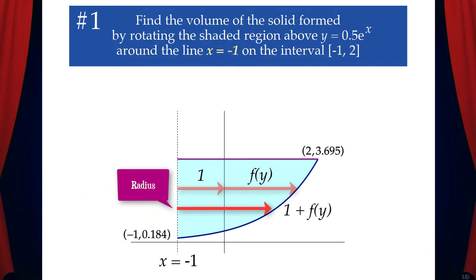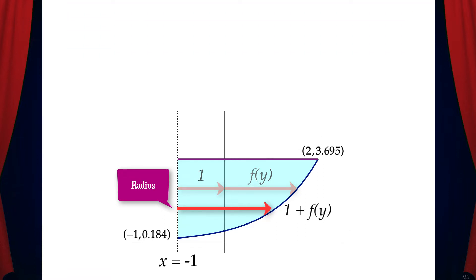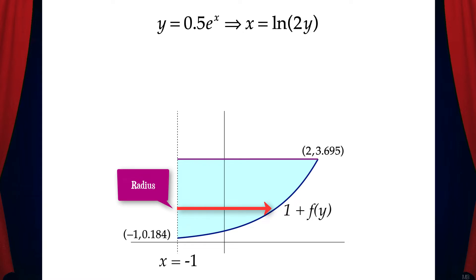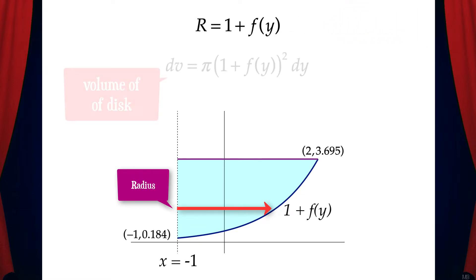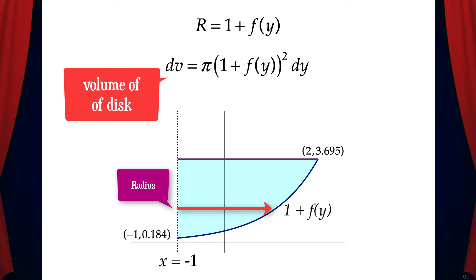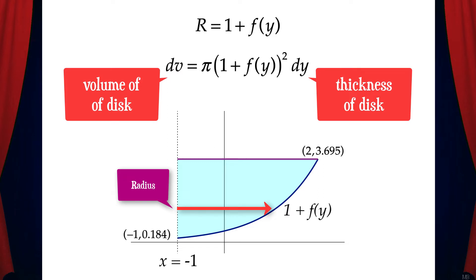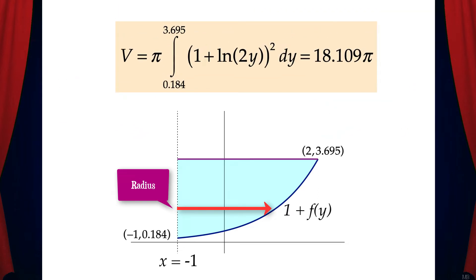That means the radius of each disc is 1 plus f of y. So now let's take the function y equals 0.5e to the x and solve it for x. This gives us x equals ln(2y), and that is f of y. The radius is 1 plus f of y. That means dv, the volume of one disc, is pi times the quantity of 1 plus f of y squared dy. V equals pi times the integral from 0.184 to 3.695 of the quantity of 1 plus ln(2y) squared dy, and that equals 18.109 pi. The limits of integration are y values because we're adding up the volumes of an infinite number of discs from 0.184 to 3.695.